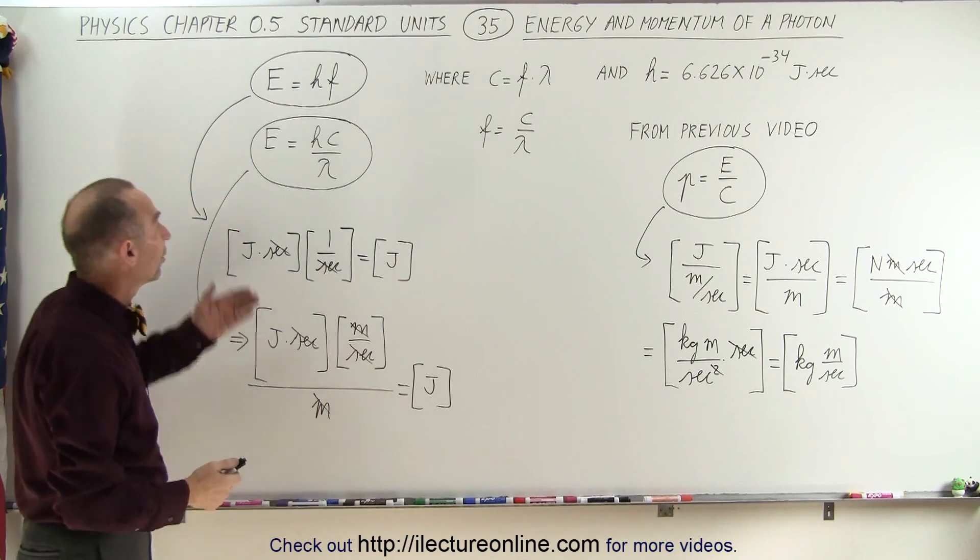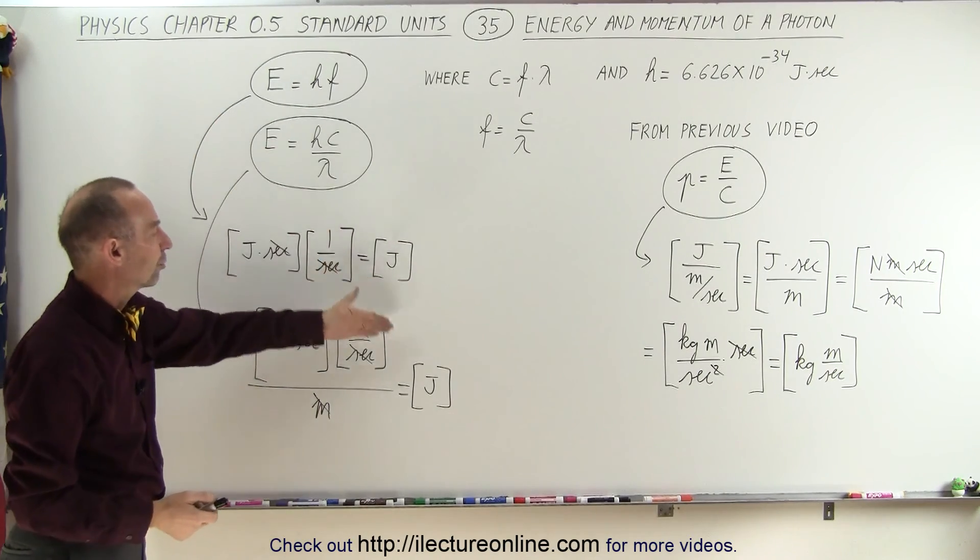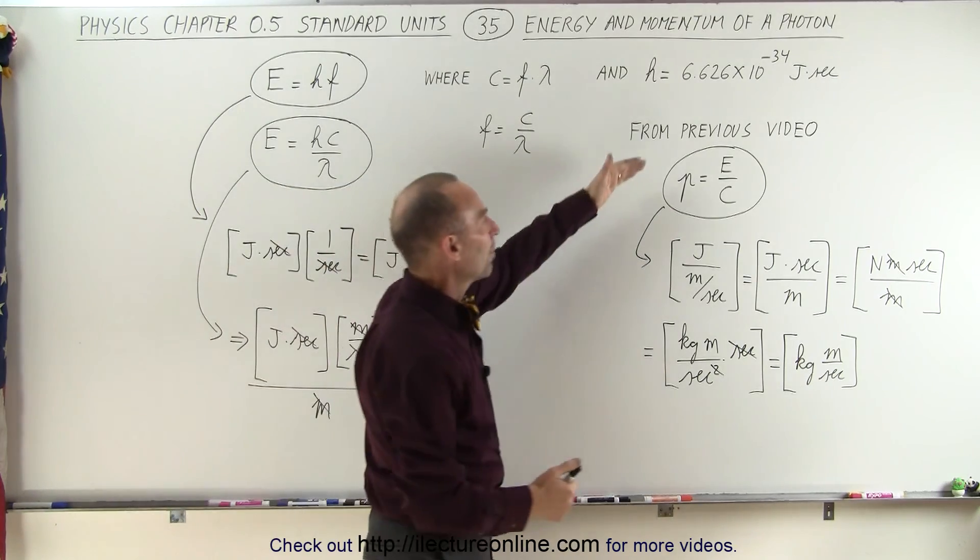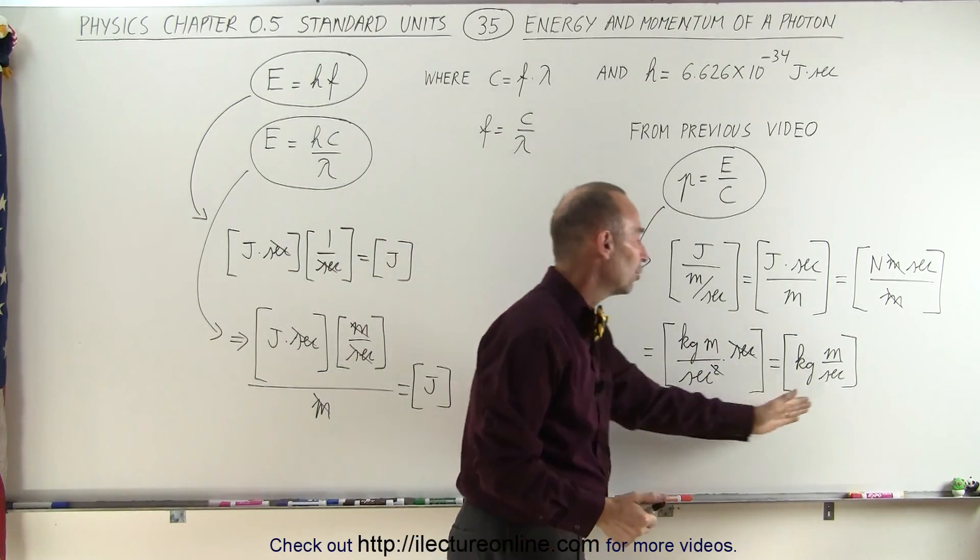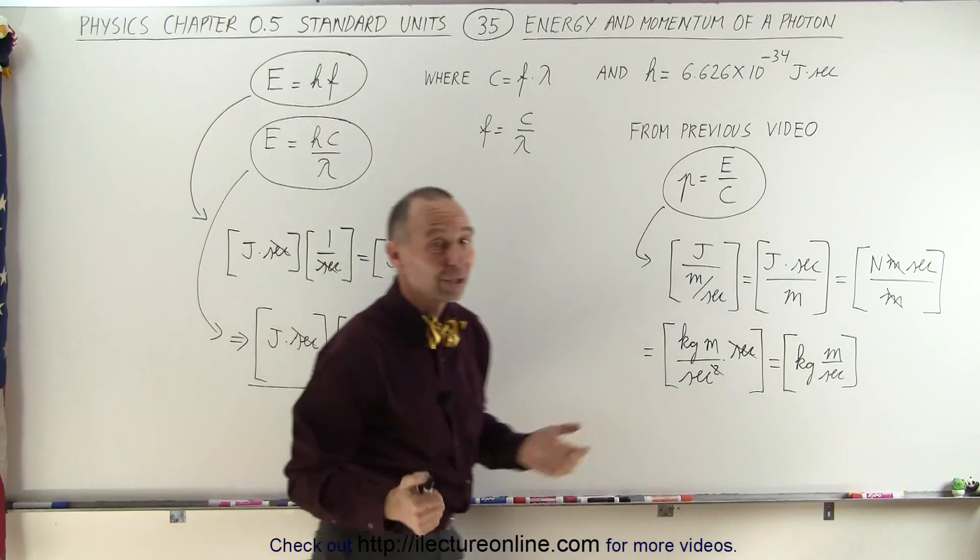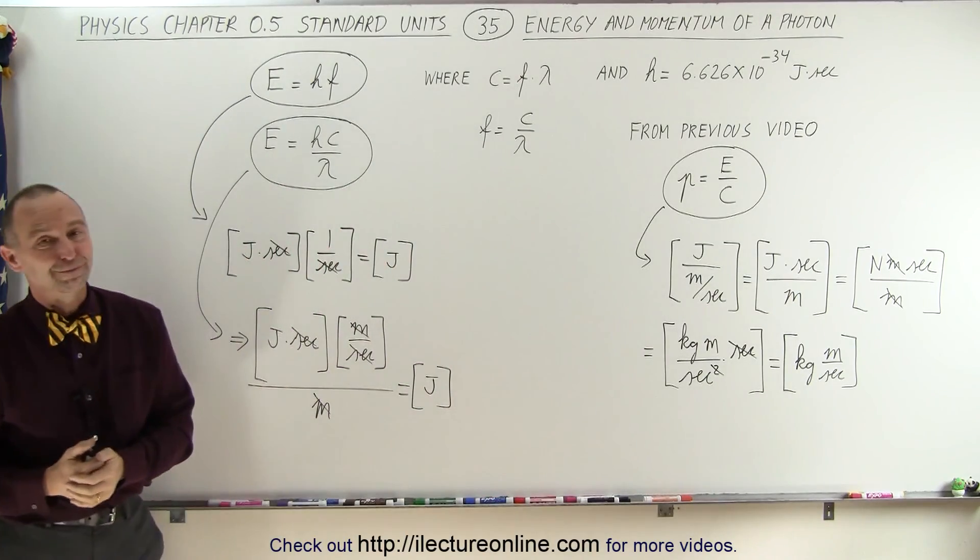So in each case, we can express energy of a photon like this and we get units of joules. We can express the momentum of a photon, and we get units of momentum. Quite amazing, but it does work. And that's how it's done.